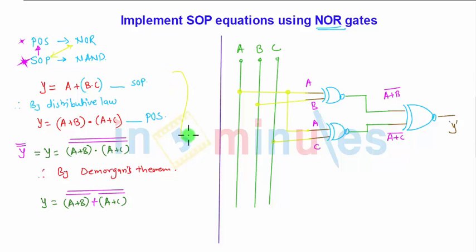So this is the basic ideological part here, a tricky part. So same procedure you can reverse when they will ask you a POS form equation to be implemented with the help of NAND gate. So this is how some tricky parts are asked in the exam. So be sure with that and stay tuned to in five minutes.